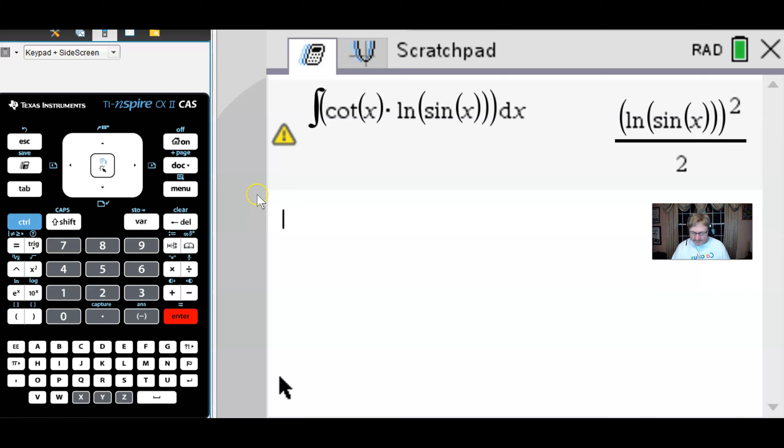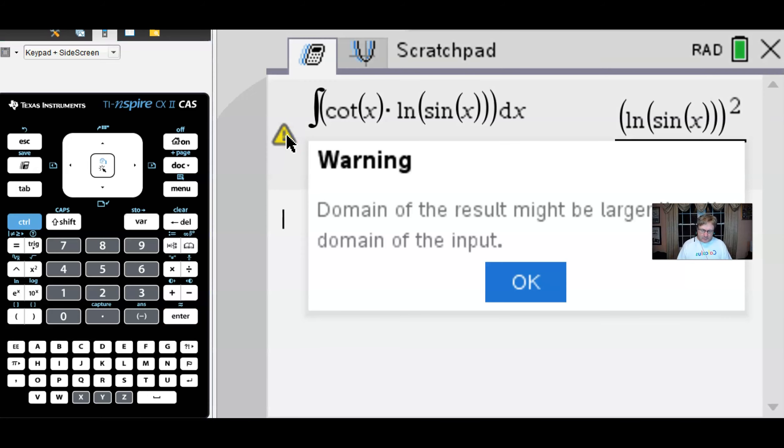Now I do want to make a point here about the exclamation point, because a lot of kids kind of draw their attention to that and think, 'No, this answer is probably not right.' Well, the exclamation point, if I hover over it, does give us a domain warning about the domain of the result might be larger than the domain of the input. I think a lot of that has to do with the fact that our input has a cotangent of x in it, which means inherently that there is a sine of x in the denominator, and there are several places where the sine of x is zero.